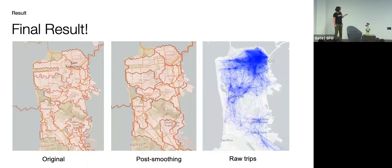Alright, so at the very end, this is the final result we get from the smoothing. So as you can see here, the boundaries are much more smoothed out. And then we still keep this nice correspondence to the raw trips data.